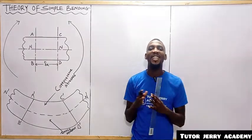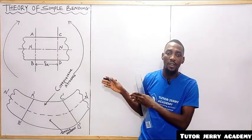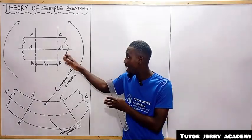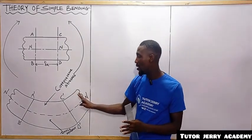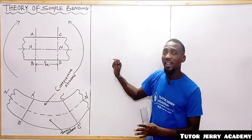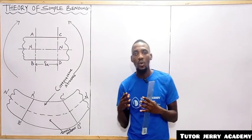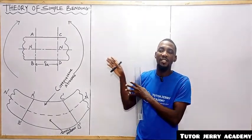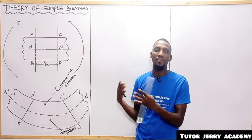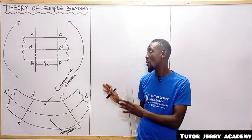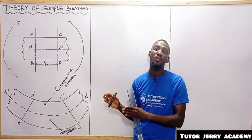The amount by which a layer increases or decreases in length depends upon the position of the neutral layer. This theory is known as the theory of bending, or simply the theory of simple bending or pure bending. This is everything you need to know about the theory of simple bending.